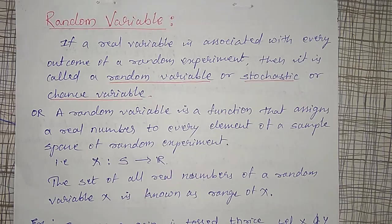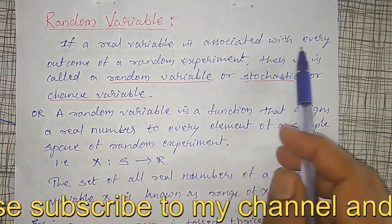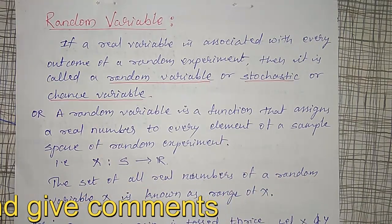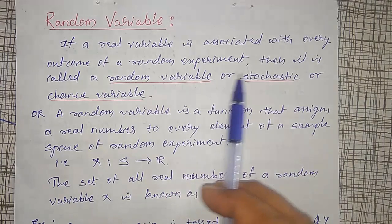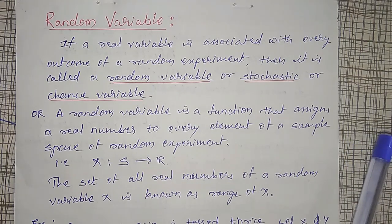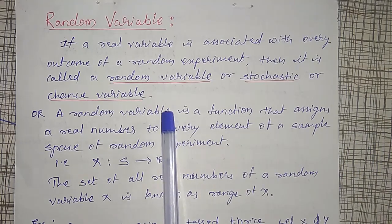Random variable means: if a real variable is associated with every outcome of a random experiment, then it is called a random variable, or stochastic variable, or a chance variable. If we are assigning one real number to every outcome of a random experiment, then such naming is known as a random variable.